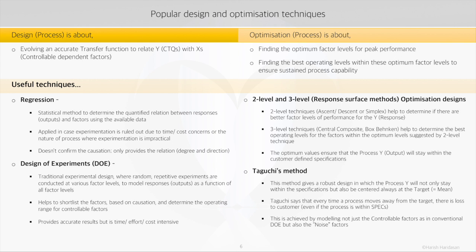This method attains robust design by modeling not just the controllable factors, as we do in conventional design of experiments, but also considering the noise factors. We had been talking about these noise factors — what exactly is a noise factor? So let's take an example. Let's say we are designing a printer.